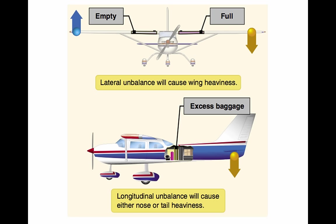It is important to re-evaluate the balance in a rotorcraft whenever loading changes. Offloading a passenger from a rotorcraft can create an unsafe flight condition. An out-of-balance loading condition also decreases maneuverability, since cyclic control is less effective in the direction opposite to the CG location. Limits for the location of the CG are established by the manufacturer—these are the fore and aft limits beyond which the CG should not be located for flight. These limits are published in the Type Certificate Data Sheet, Aircraft Specification, and the AFM or Pilot's Operating Handbook. If the CG is not within allowable limits after loading, it will be necessary to relocate some items before flight.